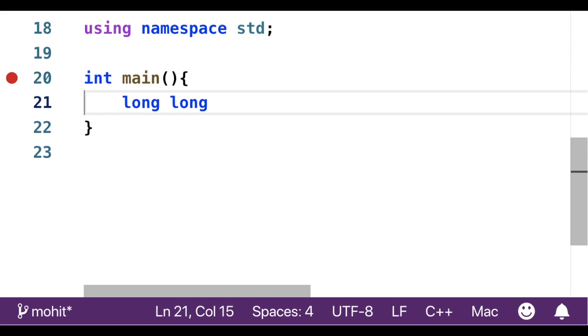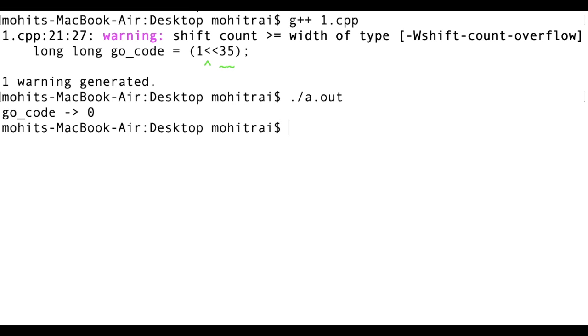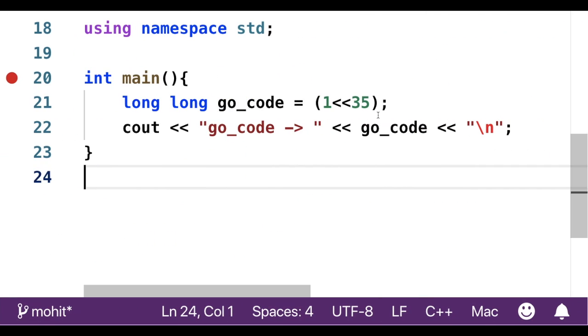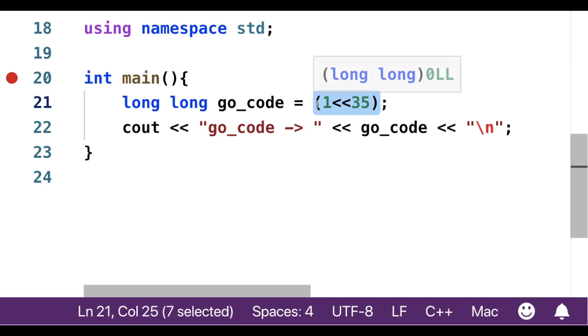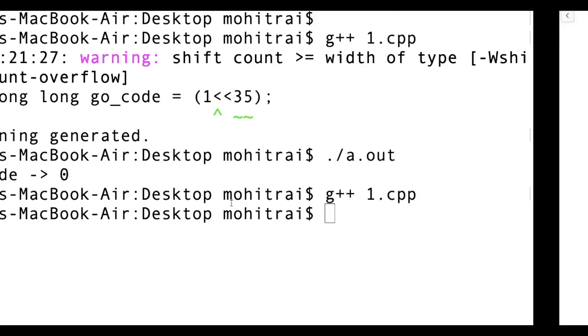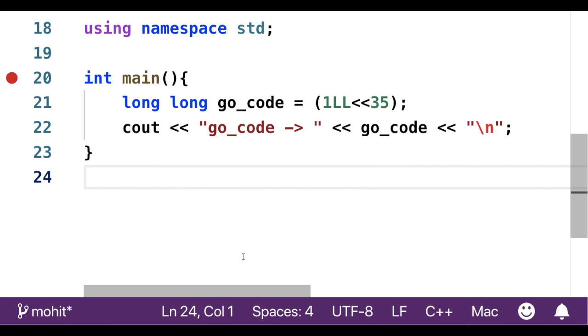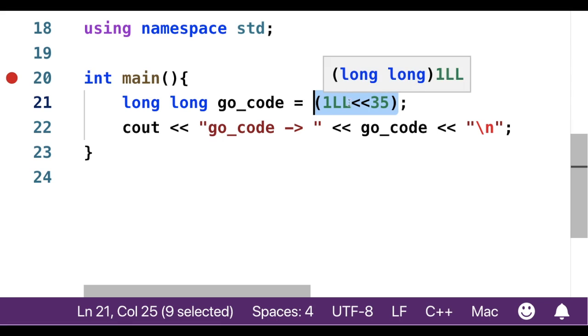Let's see what happens if we don't cast 1 into long long when x is greater than 31. So here you can see that the value of gocode is 0, but we declared the value as 2 to the power 35. Now cast 1 into long long. This will work perfectly fine. So whenever we have to use this, always cast 1 into long long.